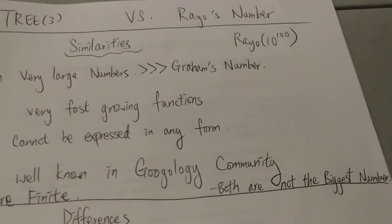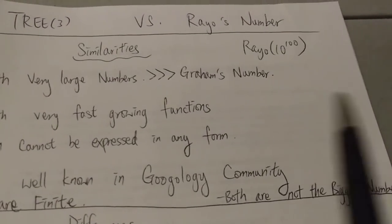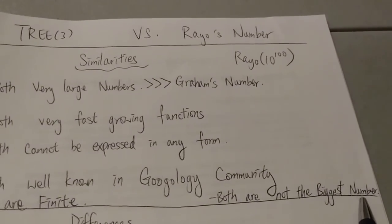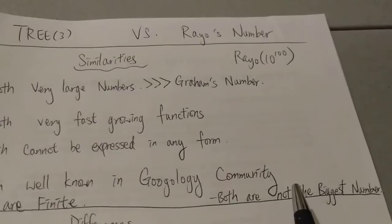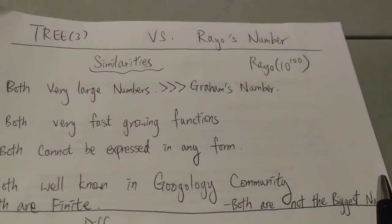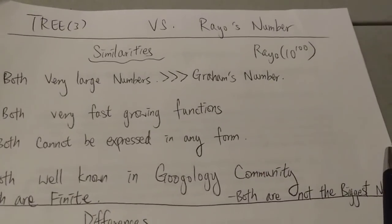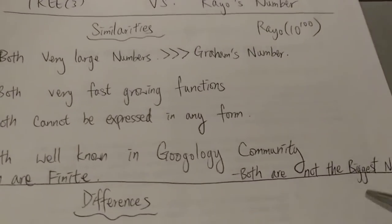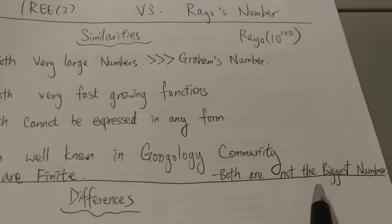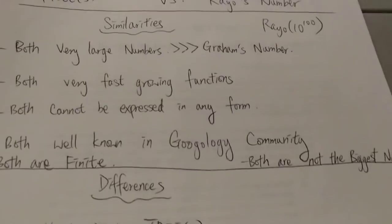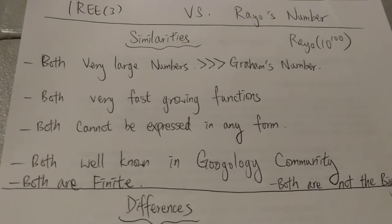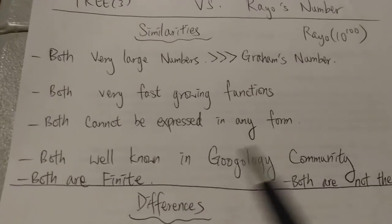And the last similarity, I would say—I might miss something—but the last one is both are not the biggest number. Because simply put, there's no biggest number because you can always add one to it. Let's say Rayo's number plus one, that's already bigger than Rayo's number. Of course, TREE(3) obviously is not the biggest number, but even Rayo's number is not the biggest number. So let me know in the comments if I missed something, but those are basically the similarities.